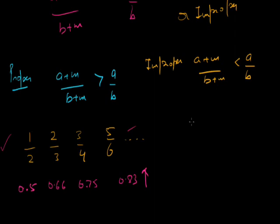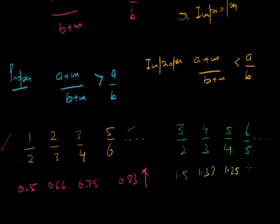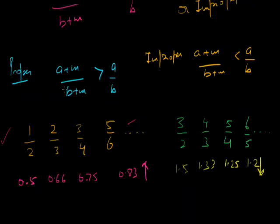For an improper fraction, a plus m upon b plus m is less than a upon b. Improper fraction means numerator is more than denominator. Take 3 upon 2: adding 1 gives 4 by 3, then 5 by 4, then 6 by 5. Values are 1.5, 1.33, 1.25, 1.2 — clearly decreasing. So for an improper fraction, adding the same quantity to numerator and denominator decreases the value. If we subtract instead, things will be reversed.